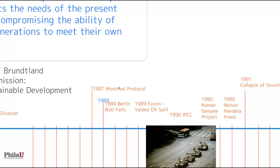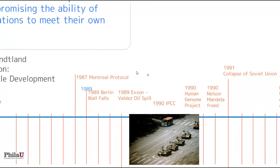The Montreal Protocol was the governments of the world getting together and banning aerosol cans because we knew that was putting holes in the ozone layer. So we do have examples where humanity can join forces across borders to solve climatic and world-sized problems.